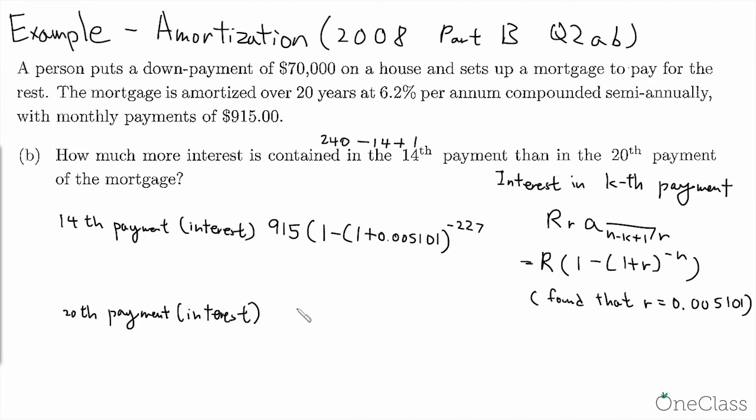Now we talk about the 20th payment. Here we're going to have the same thing: 915[1 - (1 + 0.005101)^-N] to the power of negative 240 minus 20 plus 1, so it would be 221.